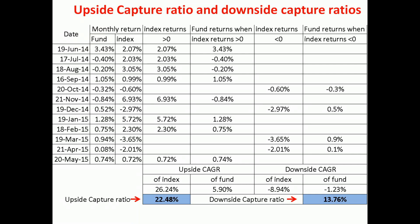This means the fund only captured 13.76% of the index's losses, which is very good. A very low downside capture is desirable. The upside capture in this case is not so great, but you cannot have everything. Between upside and downside capture, I would prefer the fund to fall lower than the index — consistent downside capture will result in alpha. The fund captured 13.76% of the index's losses but only 22.48% of the index's positive returns, and that doesn't matter too much. That's how upside and downside capture ratios are calculated. Catch you in another video. Bye-bye.